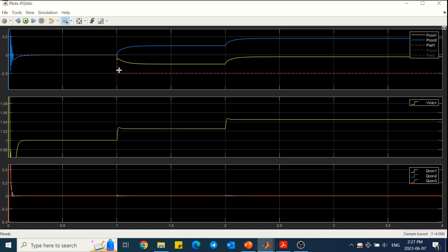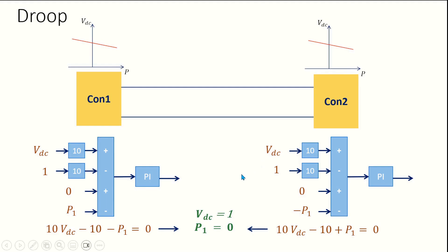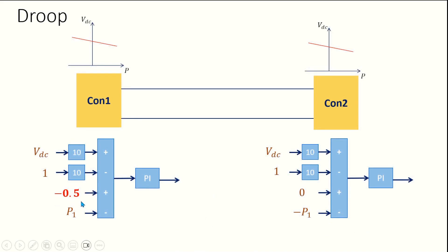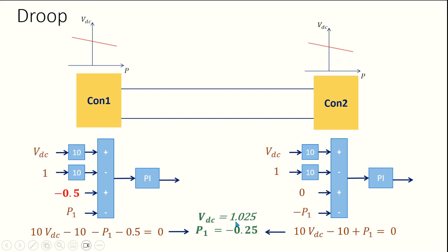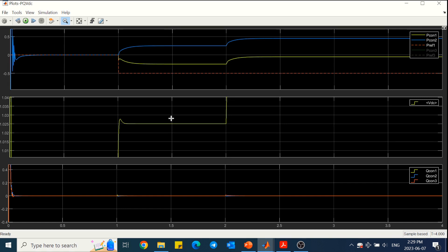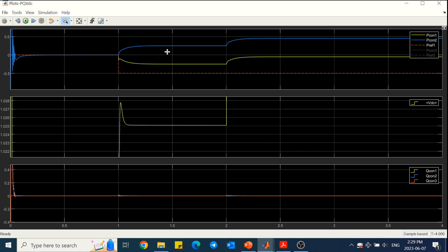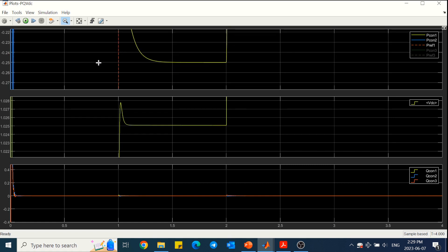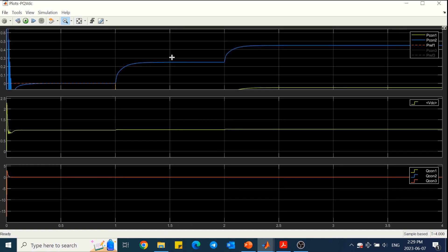We can do the same for the second part of the result. In this case the reference value for active power of converter 1 is minus 0.5, and the rest are the same. We write the equations, knowing that the input to the PI controller must be 0 during steady state, p2 equals minus p1, and the droop gain is 10. Solving these two equations leads to VDC equal to 1.025 and minus 0.25 per unit of active power for converter 1. We can see in the result that DC link voltage and the power of converter 1 match the values we obtained. The active power of converter 2 is equal to the negative of converter 1's active power.